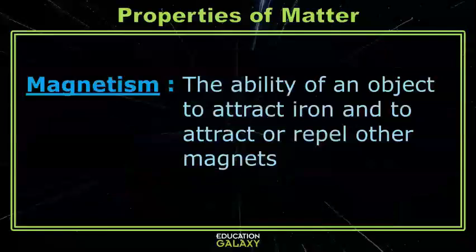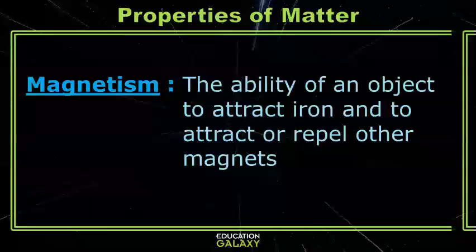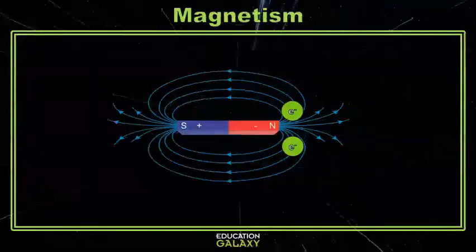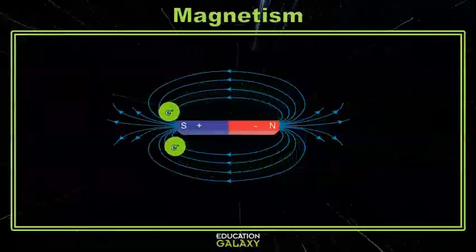Magnetism is an object's ability to be attracted or repelled by a magnet, or an object's ability to attract iron. Magnetism is caused by electrons being charged and attracting the opposite side of the object, which makes a magnetic field. A negatively charged magnetic field is always going to attract positive ions.